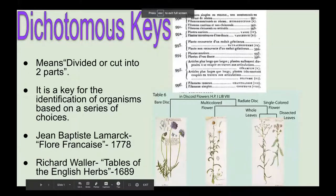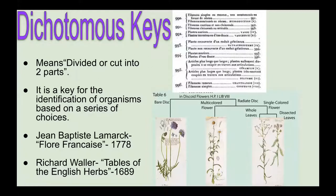Today we're going to practice using dichotomous keys to identify two insects. A dichotomous key is used to identify an unknown organism. Identifying organisms helps scientists understand an area's biodiversity and any changes that might have occurred. A dichotomous key can take many forms — it can use images, yes or no statements, or either-or statements. Dichot means divided into two parts, so dichotomous keys are usually divided into a series of two questions.